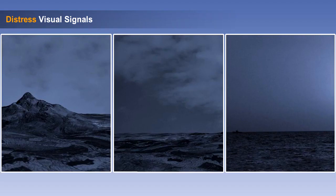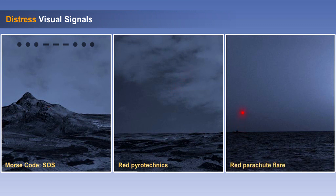The visual distress signals are: Morse code signals SOS, a succession of red pyrotechnics, and a red parachute flare.